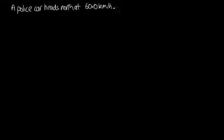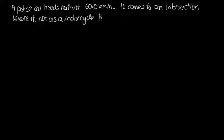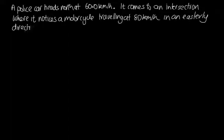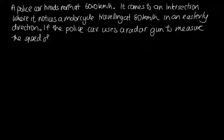So the question is: a police car heads north at 60 kilometers per hour. It comes to an intersection where it notices a motorcycle traveling at 80 kilometers per hour in an easterly direction. If the police car uses a radar gun to measure the speed of the motorcycle, what speed will it measure?